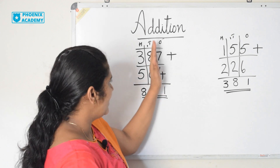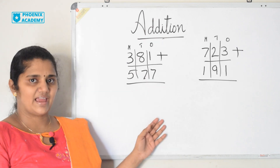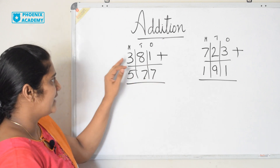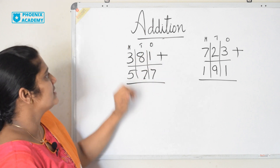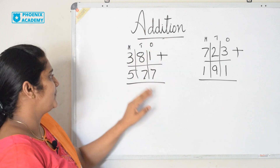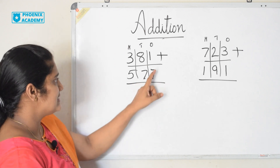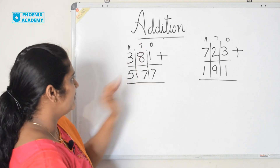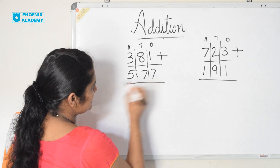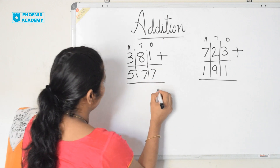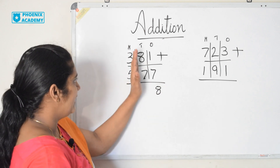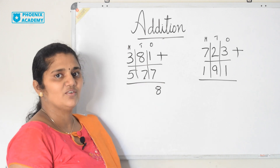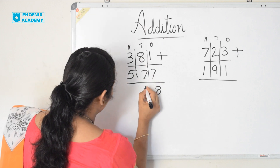In these 2 examples, we are regrouping 1's. Let's add these numbers: 381 plus 577. 381 is 1 one, 8 tens and 3 hundreds. 577 is 7 ones, 7 tens and 5 hundreds. Let's add from the 1's. 1 plus 7 is 8. 8 plus 7 is 15. 15 is 1 ten and 5 ones. So I write 5 here.